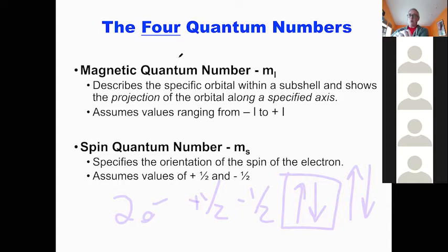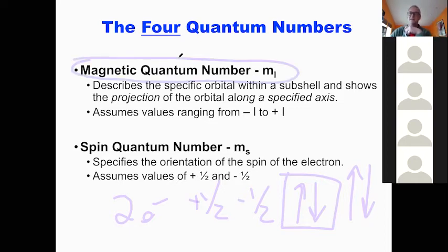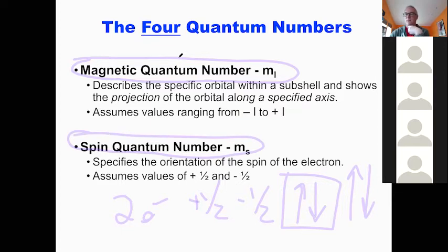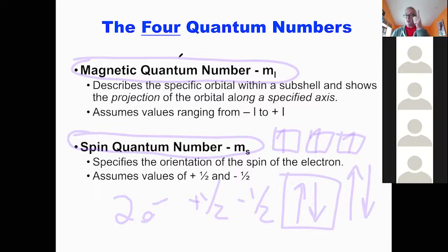This has an effect on magnetism. If you have an element with a lot of orbitals with single electrons all spinning in the same direction, that is a magnetic element. Iron has either three or four unpaired electrons all spinning in the same direction — that's why iron is magnetic.